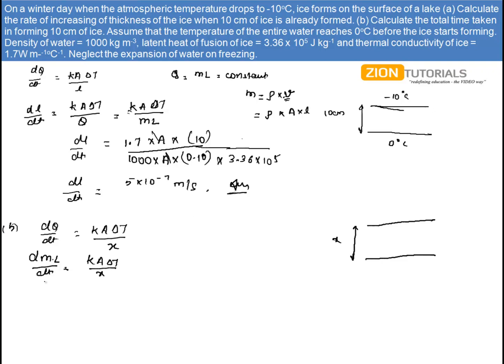So on solving this, I get rho A capital L by KA. Now mass is given by rho into volume. So again, it will be written as rho into A into capital L. Here, small l will become dx. So it will be dx by dt, KA delta T by x.